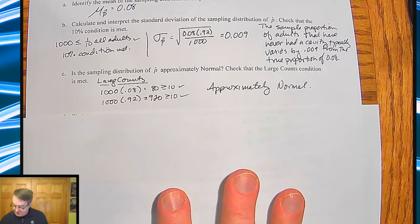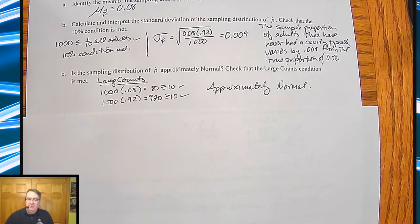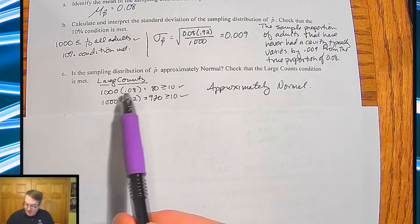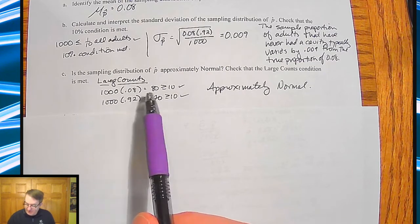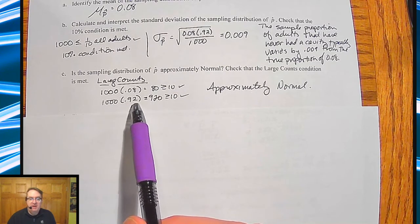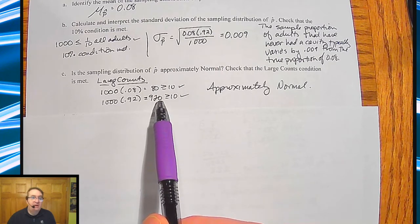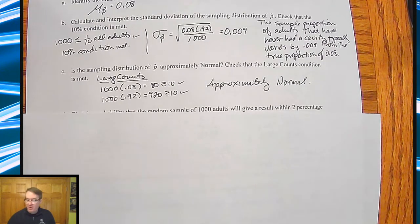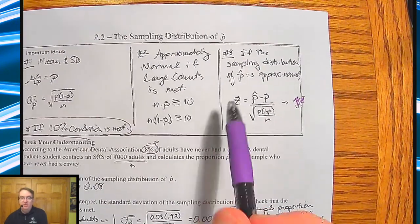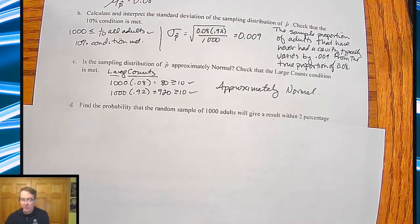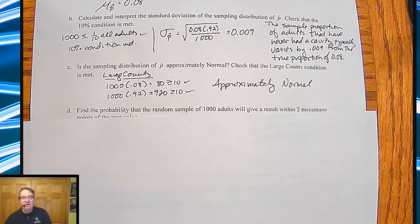Now is the sampling distribution of p hat approximately normal? To check normal, you have to do large counts. So by large counts, I'm going to multiply this out. Sure enough, 8% of 1,000 is 80. That's bigger than 10, which leaves the remaining 92% to be 920 of the 1,000. And that's obviously bigger than 10. So we can say it's approximately normal. Once we say it's approximately normal, that means we can start using z-scores. And that's the whole big idea from there.